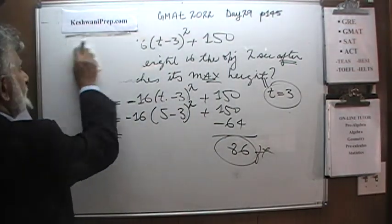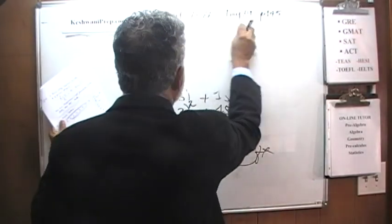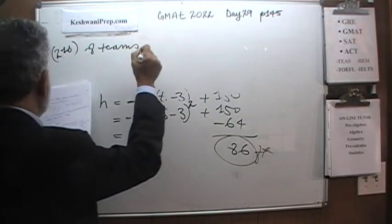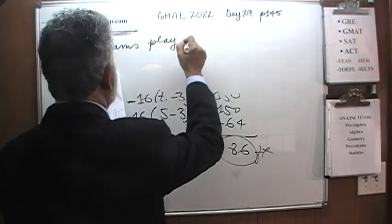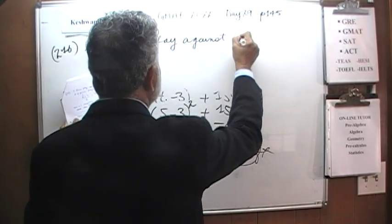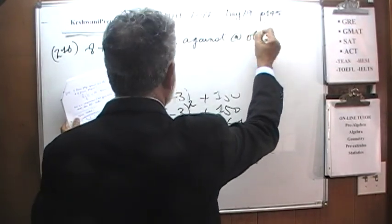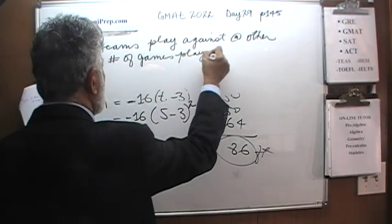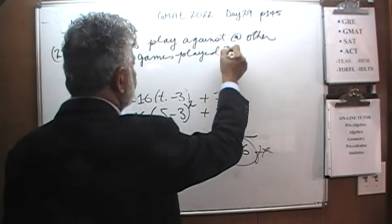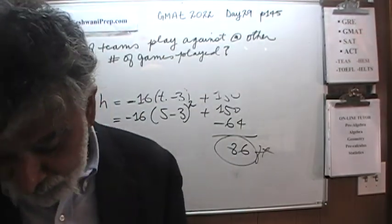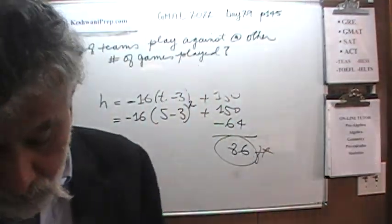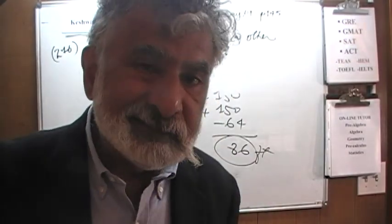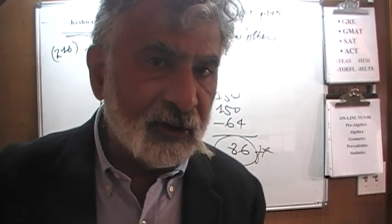Number 216. We are told that 8 teams play against each other, and the question is simply: what is the number of games played? Each team plays every other team only once. How do we figure out how many games will be played among 8 teams under that condition?